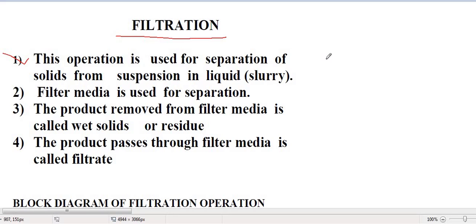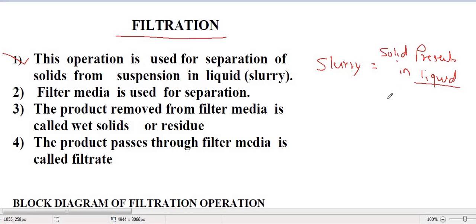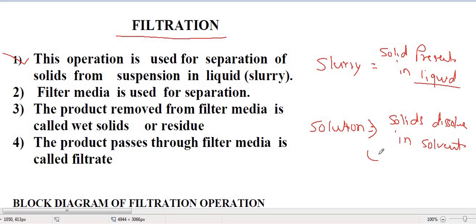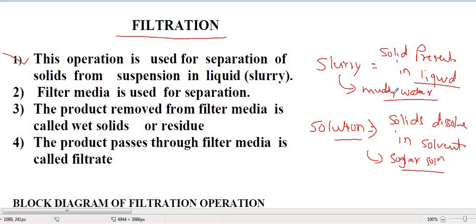So what is slurry? Slurry means solids present in liquid. Let's get the difference between slurry and solution. Solution means solids dissolve in solvents — for example, sugar solution, where sugar is dissolved in water. While an example of slurry is muddy water, where in the rainy season, small soil particles are present in water — that is called slurry.